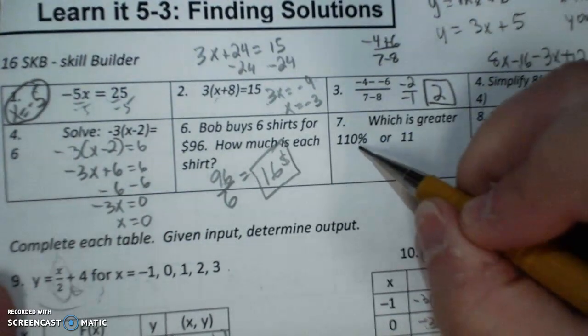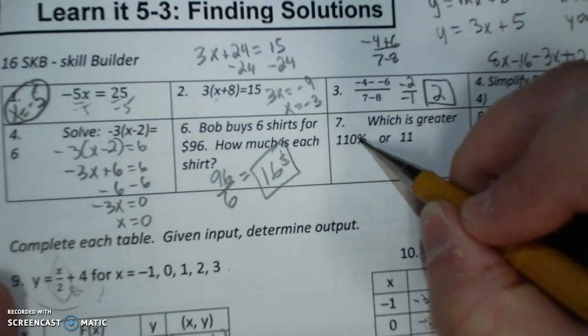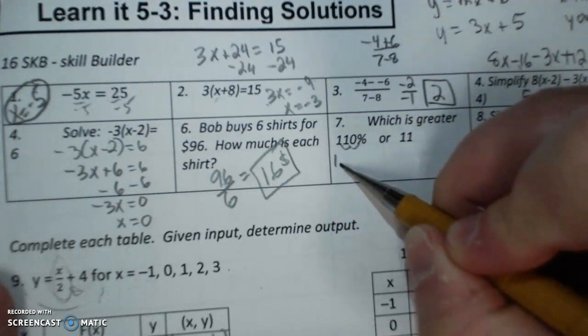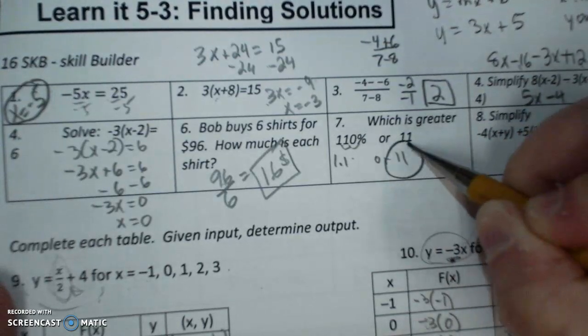Which is greater. Remember on converting a decimal to a number, you move the decimal twice. That's 1.1 or 11. So 11 is greater.